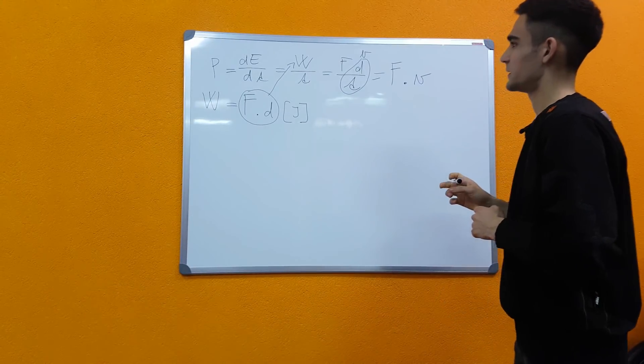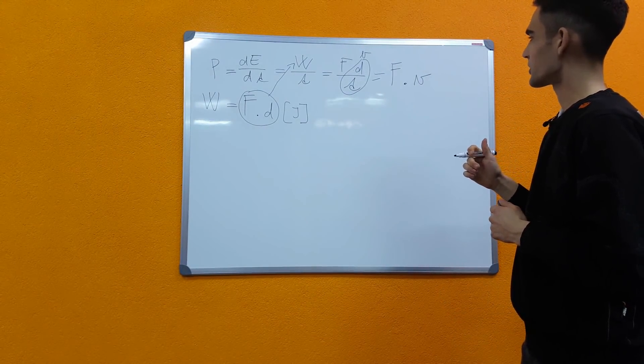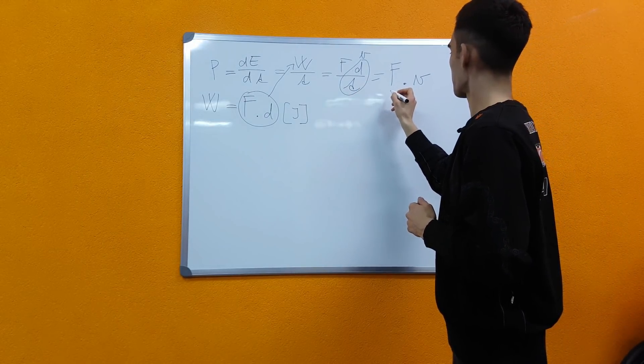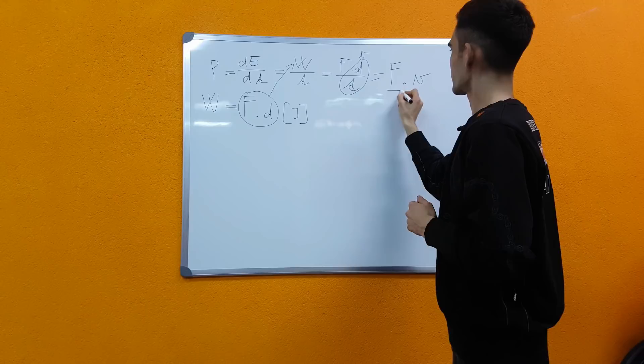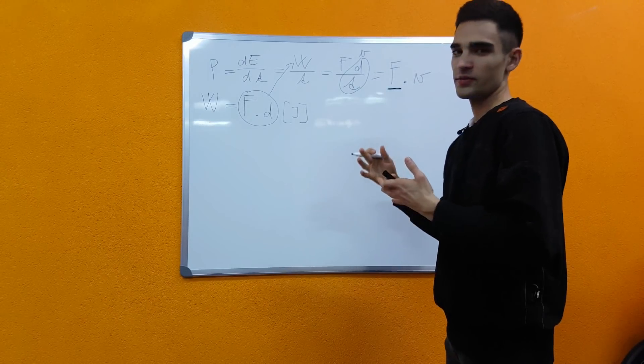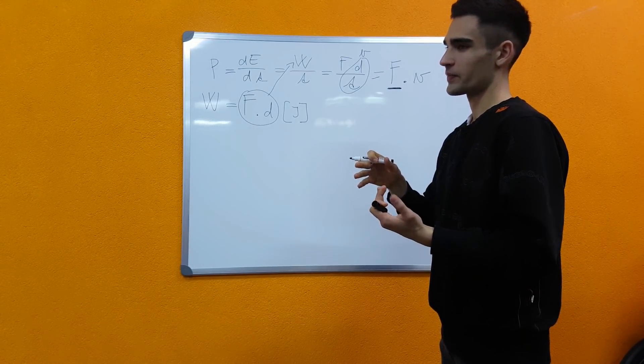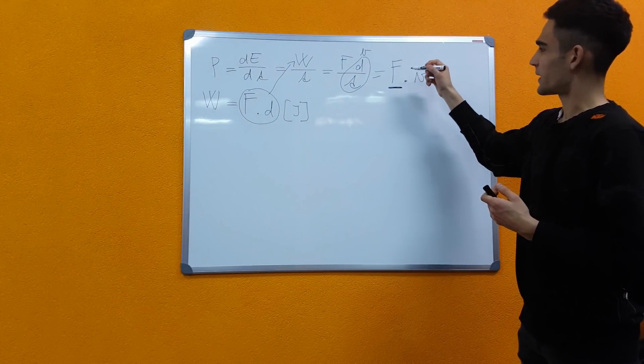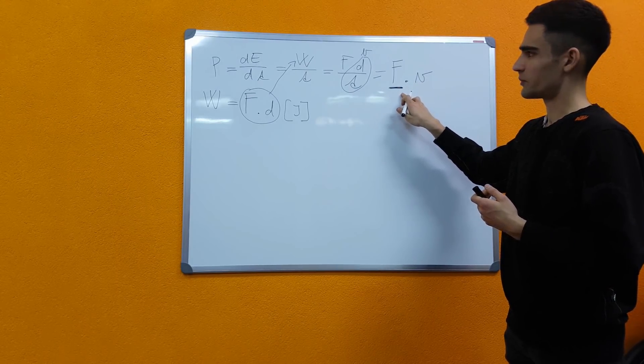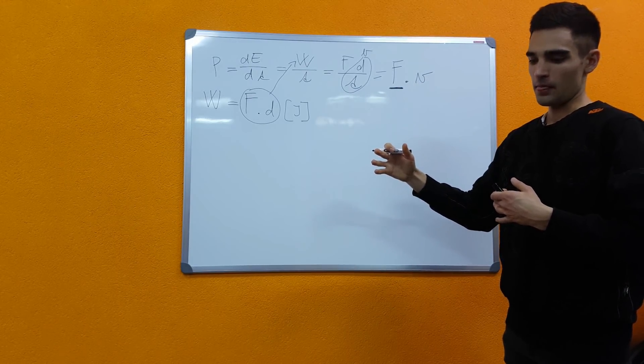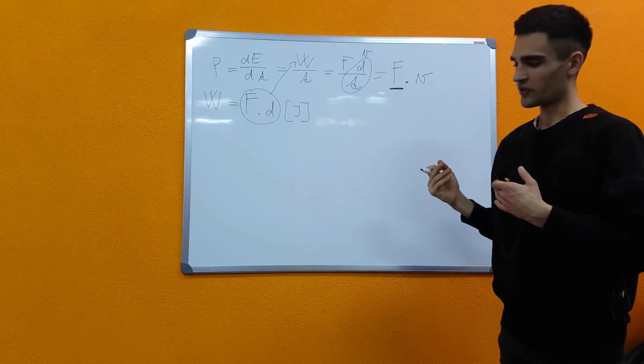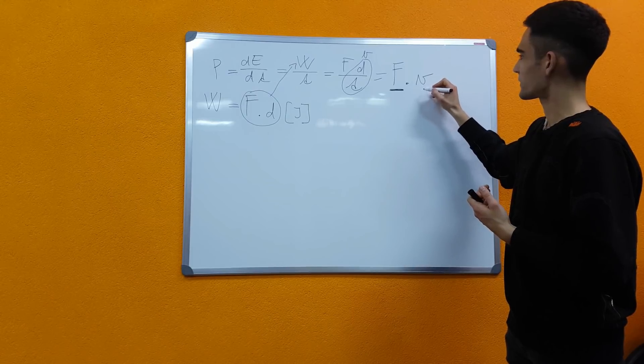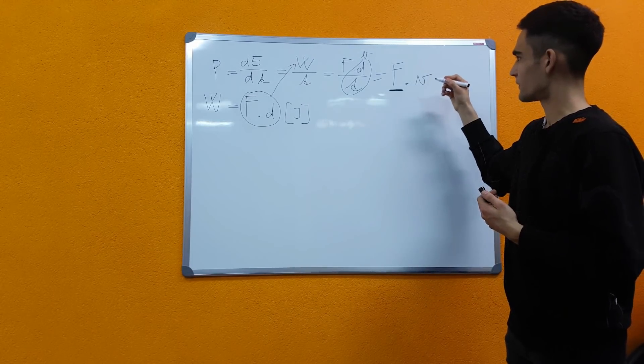And this is very important because in this case the force represents all the resistance forces that you have to overcome in this situation where the power is constant. That means that your driving force at the rear wheel of the bike is overcoming all the opposing forces or the drag forces to create an equilibrium. So you're traveling at a constant speed or constant velocity.